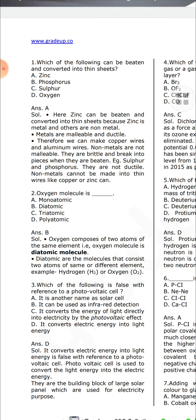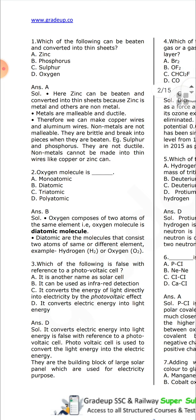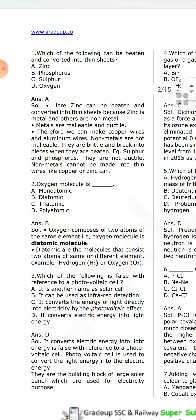Non-metals are not malleable — they are brittle and break into pieces when struck. Examples include sulfur and phosphorus. They are also not ductile; non-metals cannot be made into a thin wire like copper and zinc can. Oxygen molecules are diatomic — oxygen is composed of two atoms of the same element. Diatomic molecules consist of two atoms of the same or different elements, for example H2 and O2.